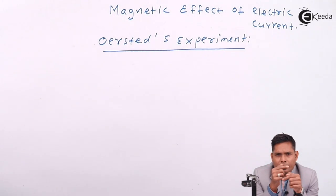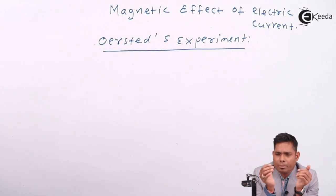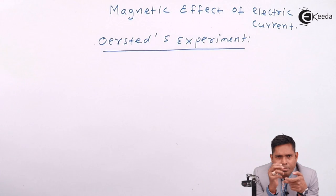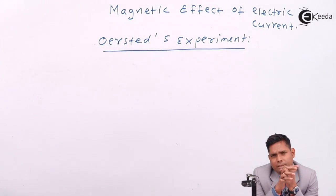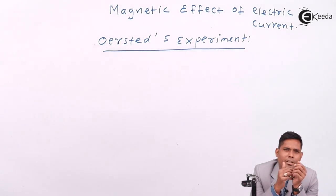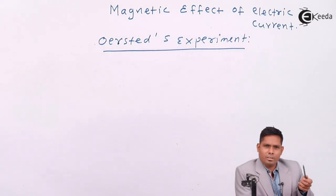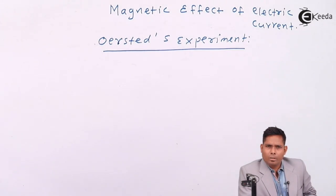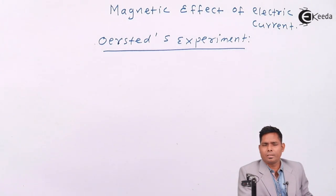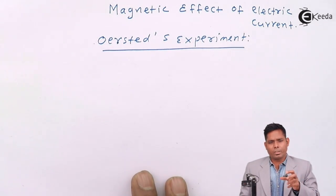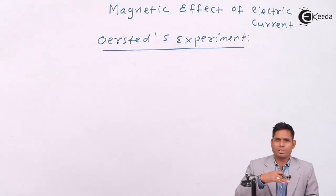In the case of current flowing through a conductor, the deflection is because of the presence of an external magnetic field. When current flows through the conductor, that external magnetic field is produced around the conductor. Because of that external magnetic field, the needle lying below the conductor is under its influence. One magnetic field interacts with another magnetic field, just as mass interacts with mass in gravity. Similarly, the magnetic field due to the needle and the magnetic field due to the current interact, causing deflection of the needle.